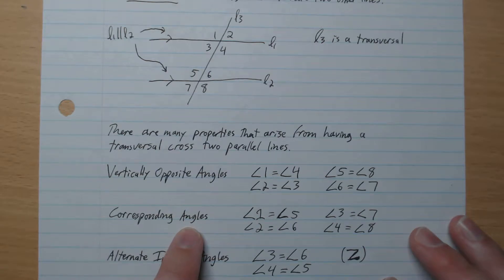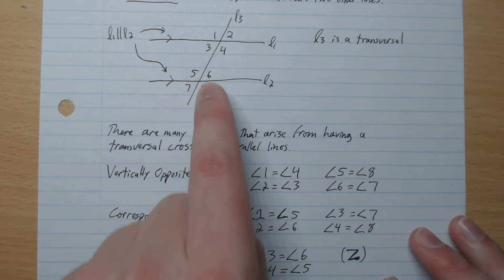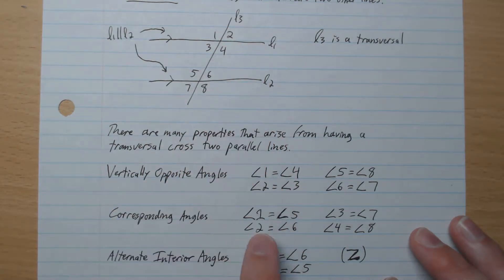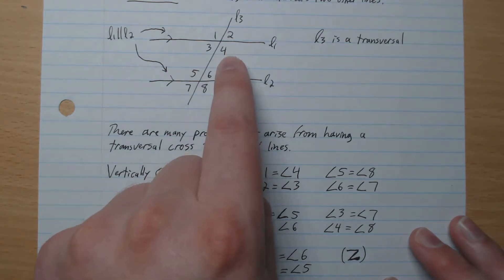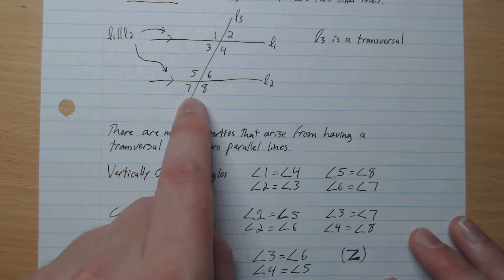Corresponding angles. So this one corresponds with 5, 2 corresponds with 6, 4 corresponds with 8, 3 corresponds with 7.